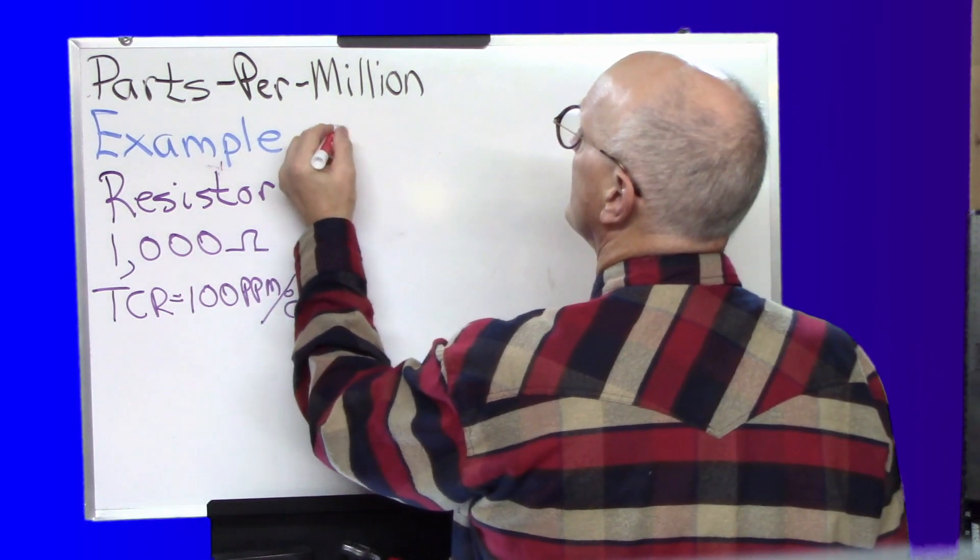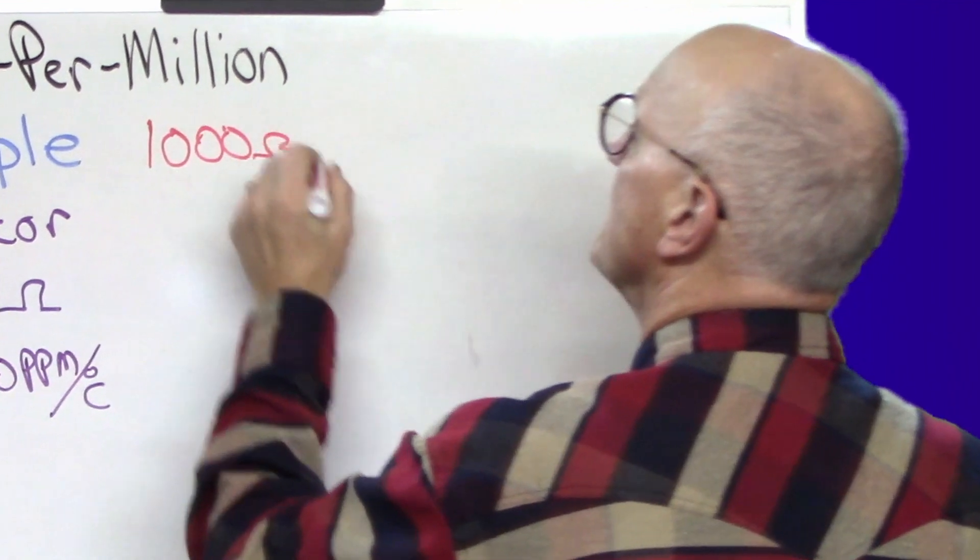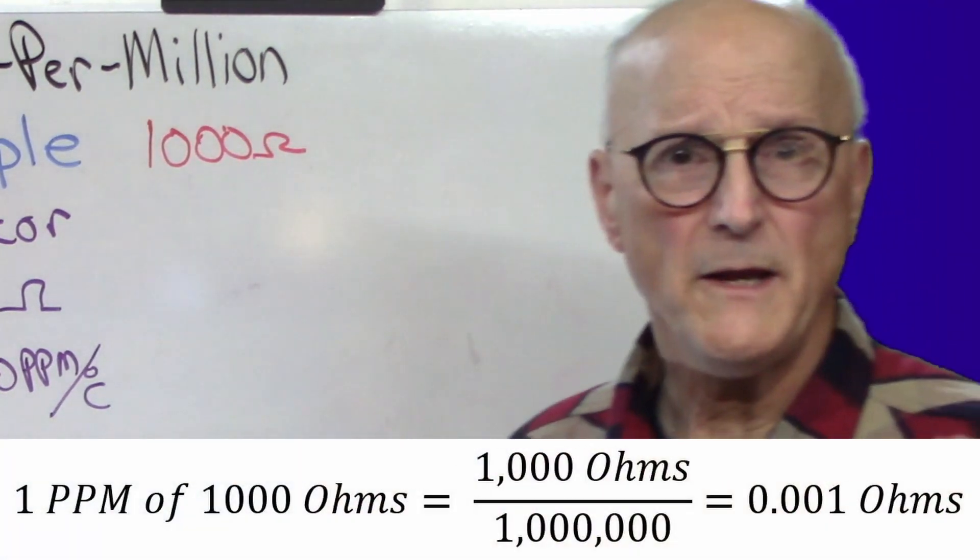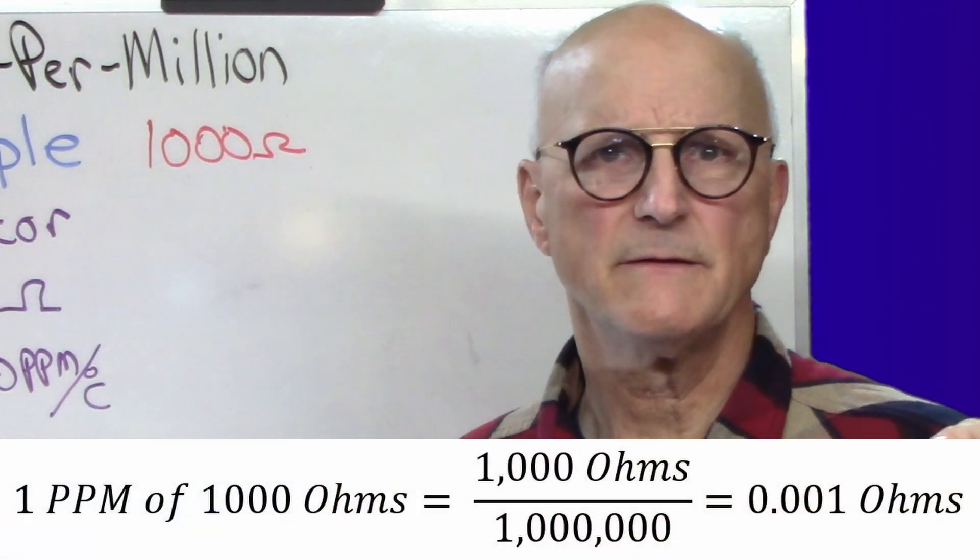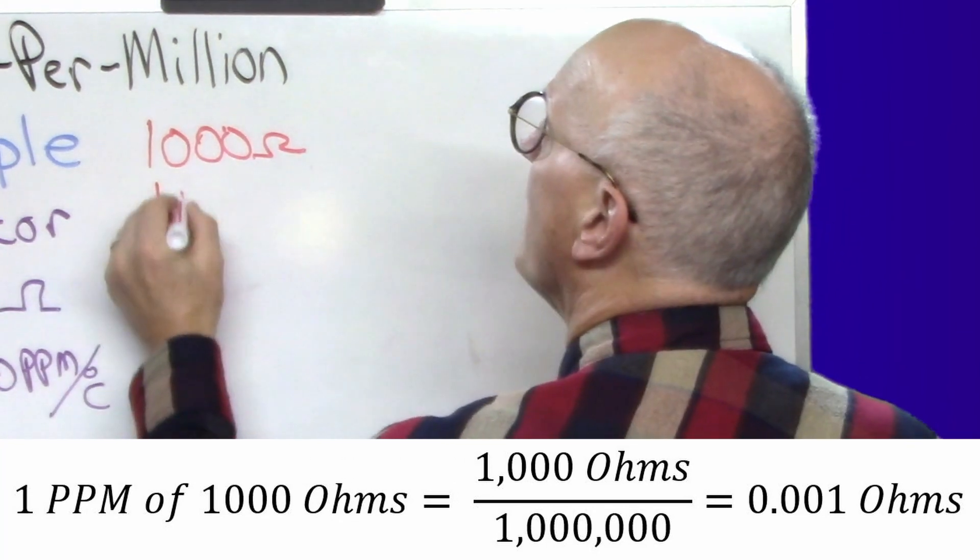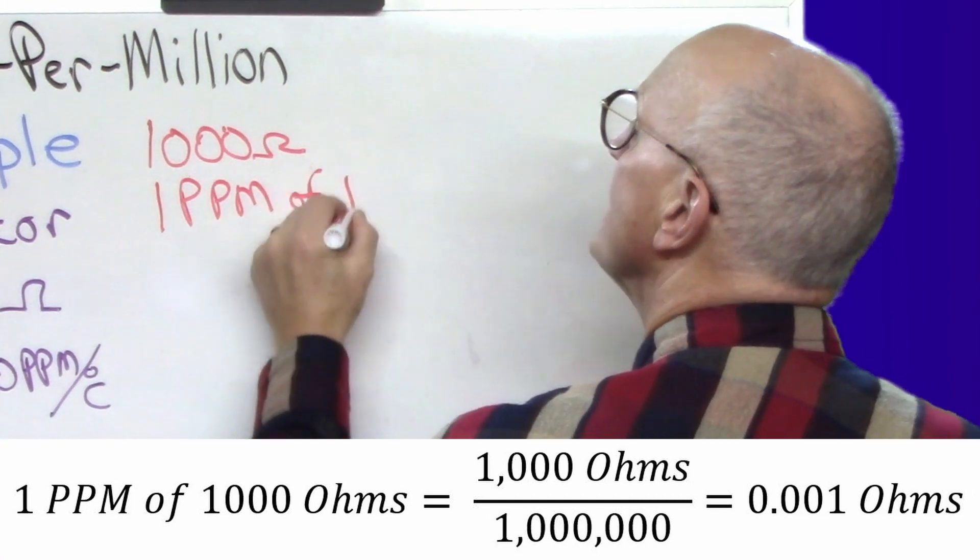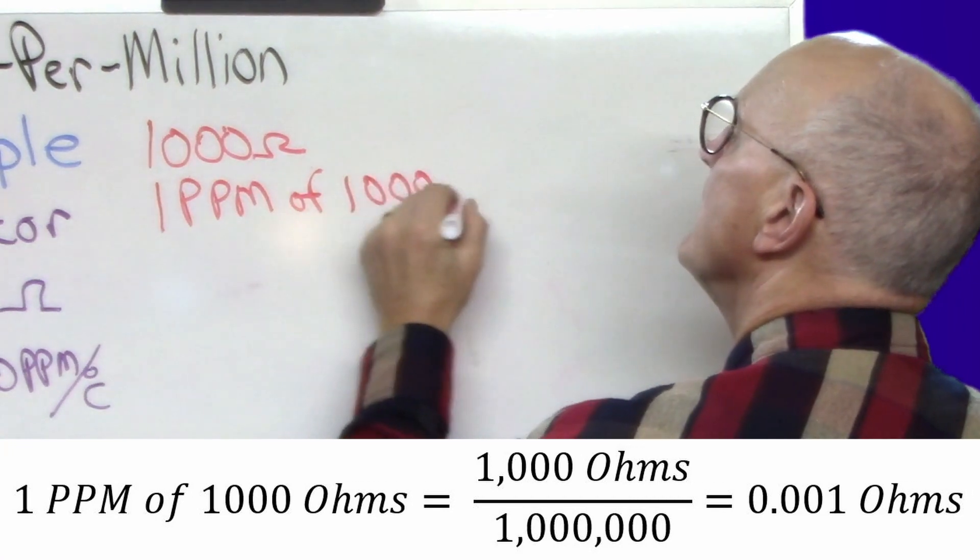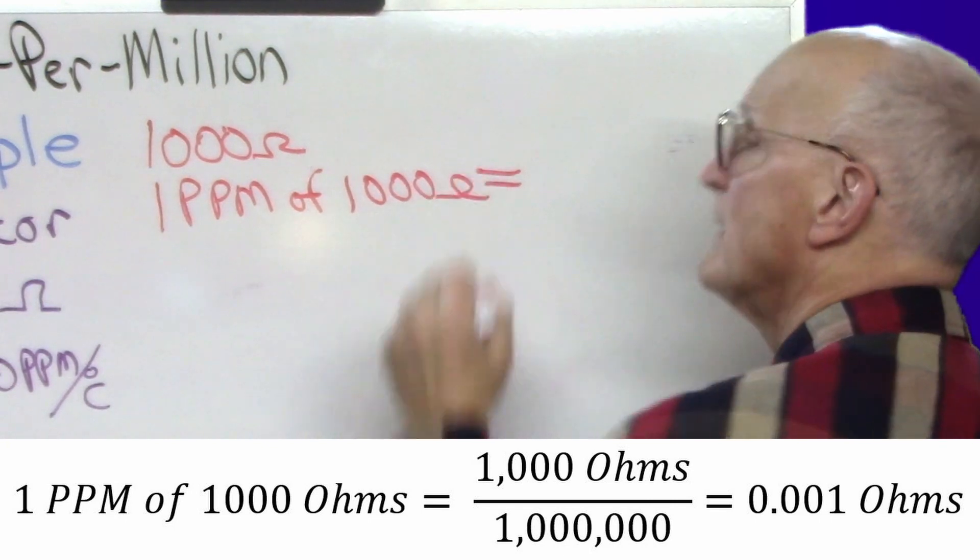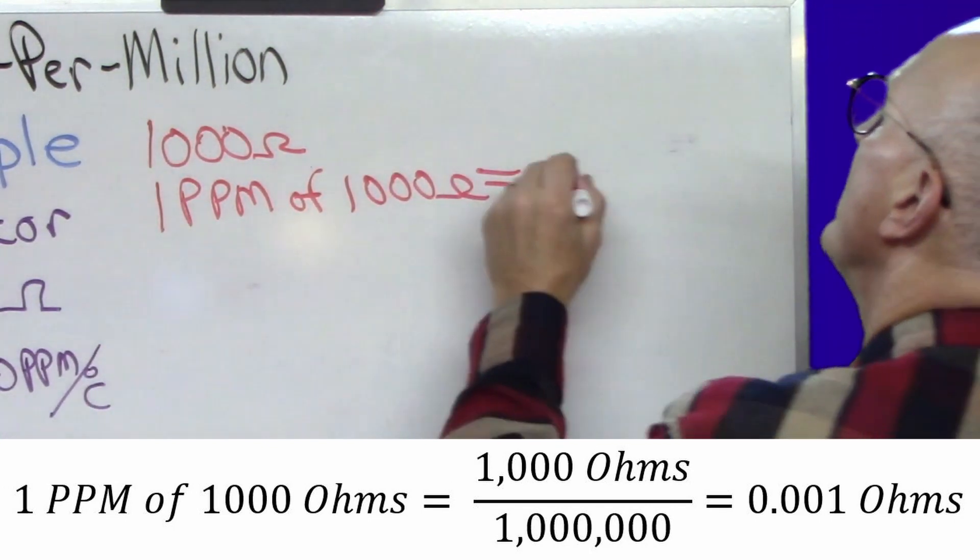Okay, so we have 1,000 ohms. And 1 part per million of 1,000 ohms. So 1 part per million of 1,000 ohms is 0.001 ohms.